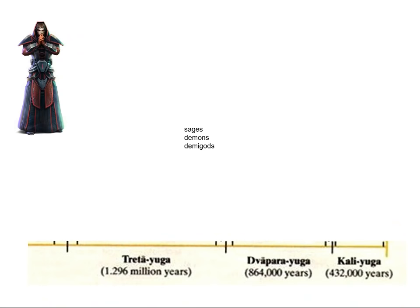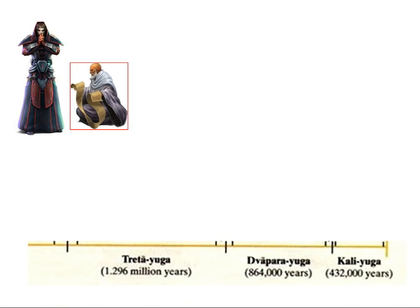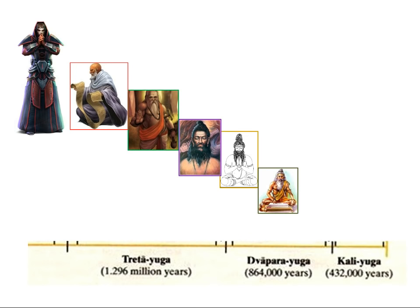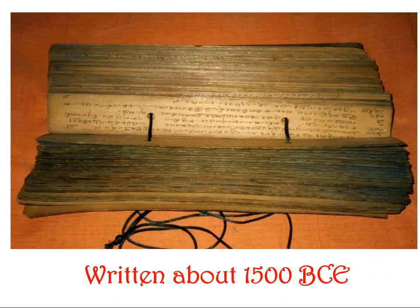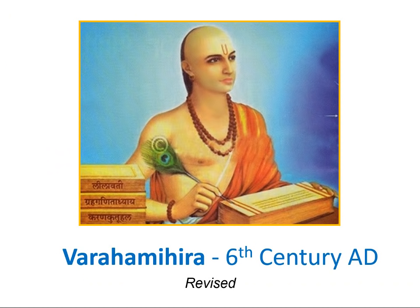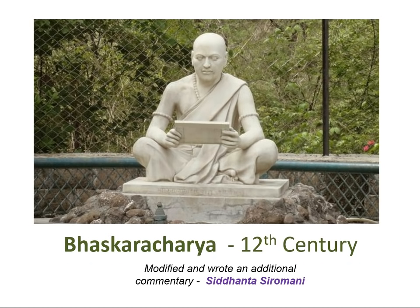Maya Dhanava then passes this on to sages, demigods, and demons over hundreds of thousands of years, until it reaches the earth in the Kali Yuga. As part of the wider Jyotish Sastras, it was written around 1500 BCE onto palm leaves. Varaha Mihira of the 6th century AD revised the scripture, and in the 12th century he modified it and wrote an additional commentary called the Siddhanta Shiromani.